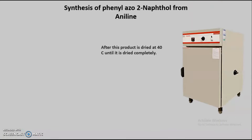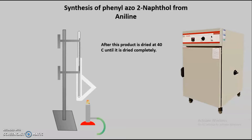After recrystallization, the next step is to dry our product. In a hot air oven at 40 degrees Celsius, we carry out drying of the product until completely dried. Once we have the dried product, we carry out determination of the melting point. With the help of a Thiele tube, we determine the melting point — one precaution being that we heat the Thiele tube at the side arm so as not to increase the temperature too rapidly.